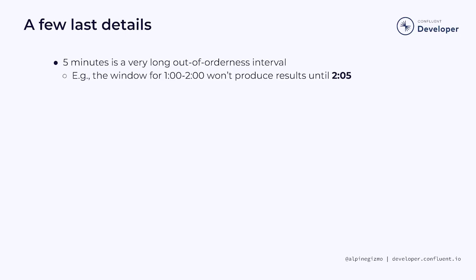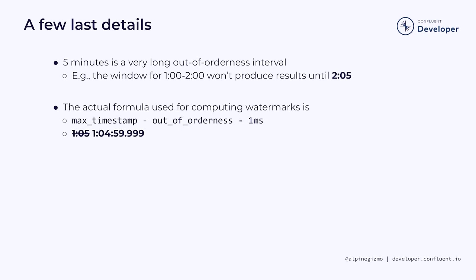There are a few details I glossed over. First, for most use cases, allowing for events to be as much as 5 minutes late is being overly generous. If this example was running in real time, the window ending at 2 o'clock wouldn't produce its results until 2:05 — that's a long time to wait, and typical worst-case message delivery delays are much shorter than 5 minutes. The second point is that the actual formula Flink uses to compute watermarks subtracts an additional millisecond. So the true formula takes the maximum timestamp, subtracts the out-of-orderness estimate, then subtracts one millisecond — to avoid a classic off-by-one error.